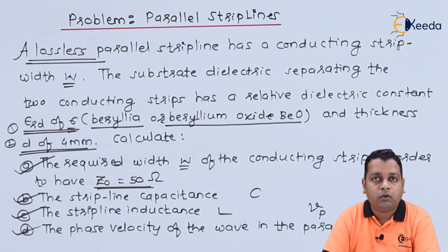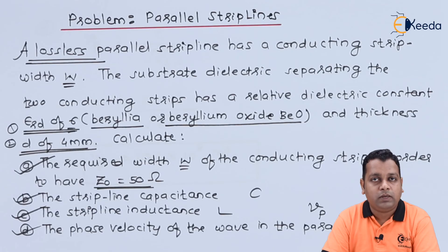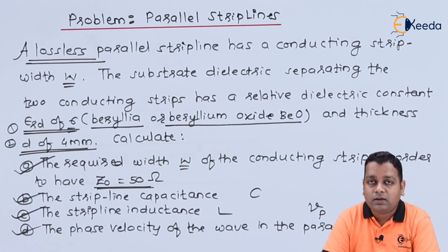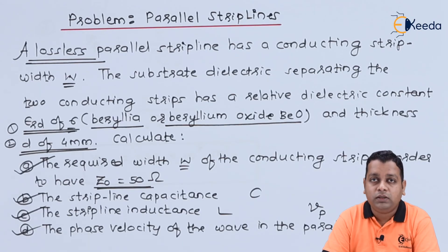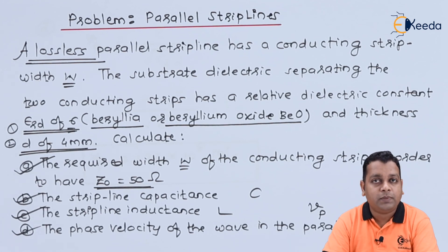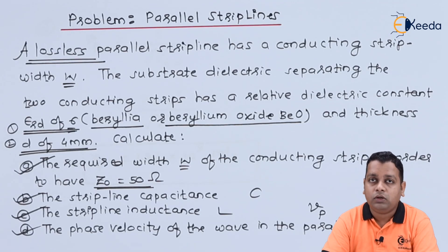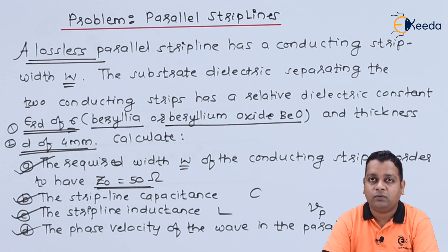The four parameters of the parallel strip line have been calculated in a straightforward manner. In the next lecture, we will continue with the same chapter to address microwave transmission using the coplanar type of strip line. Subscribe to the Ekrada channel for more topics on microwave engineering.